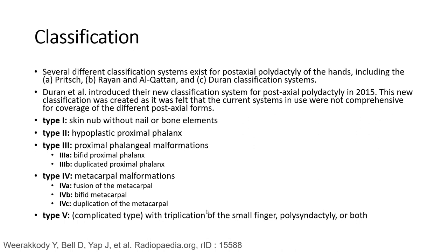Classification. There are many classifications for post-axial polydactyly. The latest classification, produced by Durand et al., defines: type 1 as skin tag without nail or bone element; type 2 as duplicate proximal phalanx; type 3 as proximal phalanx malformation; type 4 as metacarpal malformation; and type 5 with duplication of the small finger, polysyndactyly, or both.